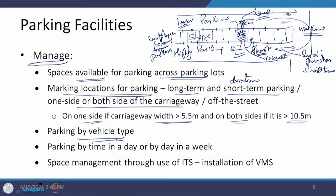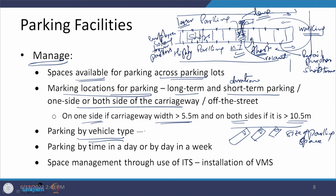Parking by vehicle type is also important. A truck requires a much larger space than a car, and a cycle rickshaw, scooter, or bike requires an even smaller space. The size of the parking space will differ accordingly, defining how much area is absorbed by each vehicle type. This also depends on the activities in the area — a mandi area may have tractors and trucks, while a residential area will have mainly cars, scooters, or bikes — requiring different dedicated parking sizes.